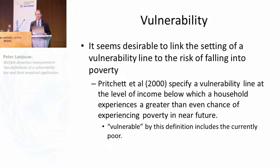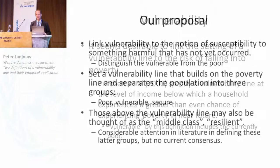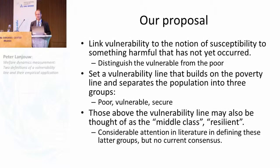Our paper distinguishes between the poor and the vulnerable: we define the vulnerable as those currently not poor but facing a higher risk of becoming poor. Those currently poor are already, by definition, in some sense vulnerable. So we link vulnerability to susceptibility to something harmful that has not yet occurred, and propose a vulnerability line that separates the population into three groups: poor, vulnerable, and secure — or prosperous, or middle class.